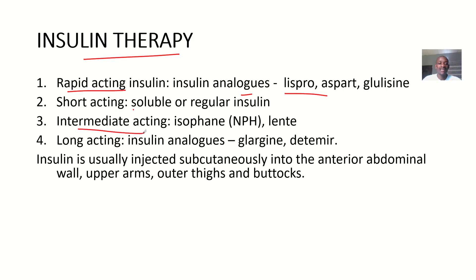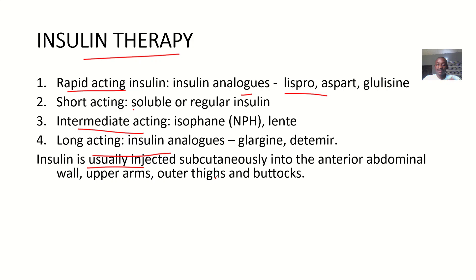We have intermediate-acting insulins like Isophane and Lente. We also have long-acting insulin analogs like Glargine and Detemir. Insulin is usually injected subcutaneously into the anterior abdominal wall, the upper arms, the upper thighs, and also the buttocks.